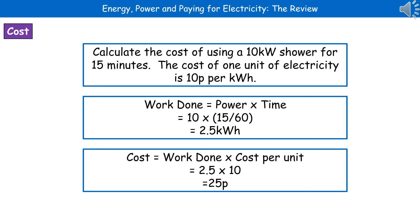The other calculation they could ask is to calculate the cost of using an appliance for a certain period of time, likely merging two parts into one question. For example: calculate the cost of using a 10 kilowatt shower for 15 minutes, given the cost of one unit of electricity is 10 pence per kilowatt hour. We can't jump straight to the overall cost — we must find the work done first. Work done equals 10 kilowatts times 15 divided by 60, giving us 2.5 kilowatt hours. Then we multiply by the cost per unit: 2.5 times 10 pence gives us 25 pence.